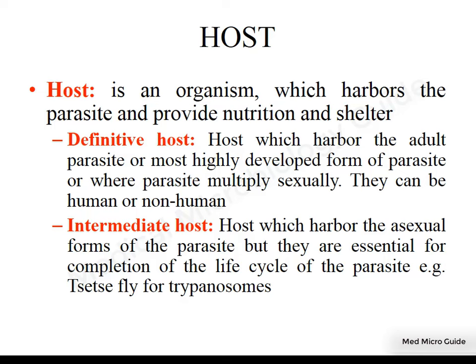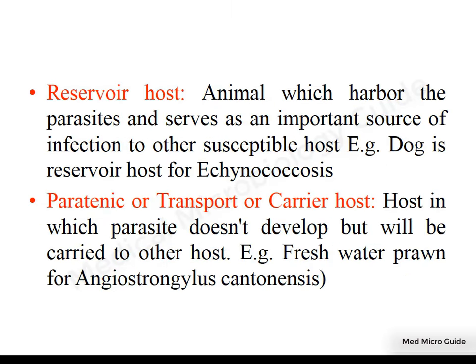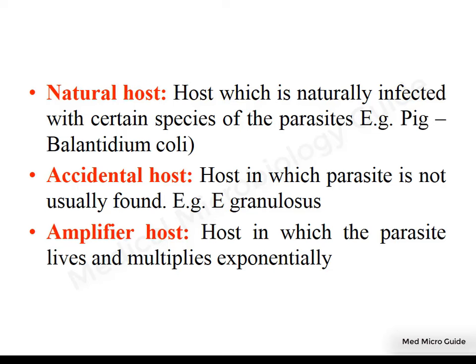This definitive host can be a human or non-human. An intermediate host is one which harbors the asexual form of the parasite and is essential for completion of the life cycle. Example: tsetse fly for trypanosomes. A reservoir host harbors the parasite and serves as an important source of infection to other susceptible hosts. The paratenic, transport, or carrier host harbors the parasite without undergoing disease but carries the parasite to another host. A natural host is one for which the parasite causes infection naturally. An amplifier host is one in which the parasite multiplies exponentially and is transmitted to another susceptible host.